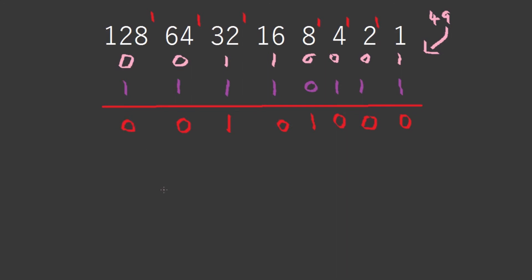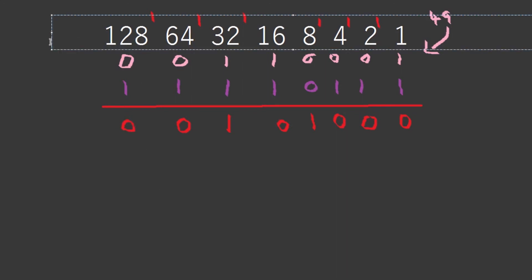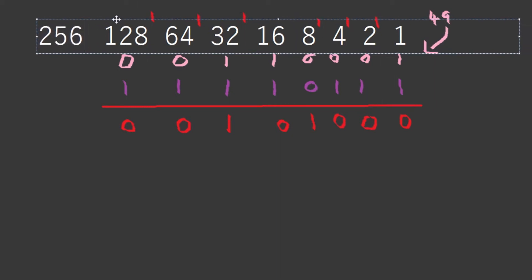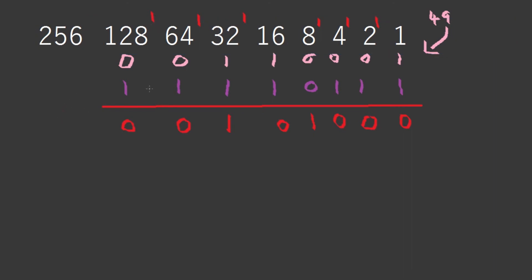We realize we need to add another place called 256. So the final answer bits are 0, 1, 0, 0, 1, 0, 0, 0. We have to add a 1 there at the 256 position. We put a 0 and a 1 and a 1 there.